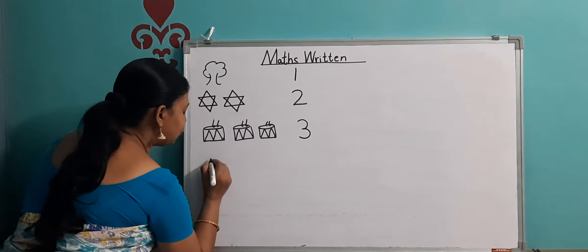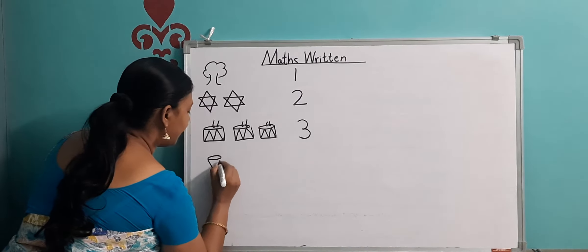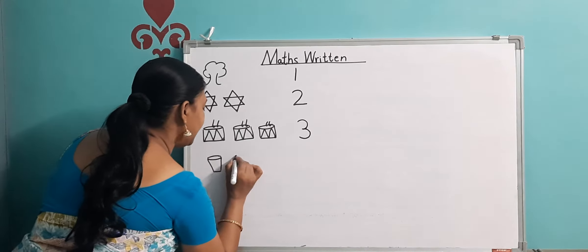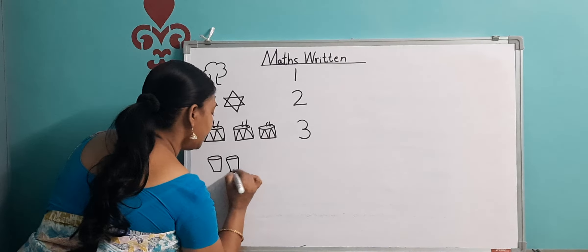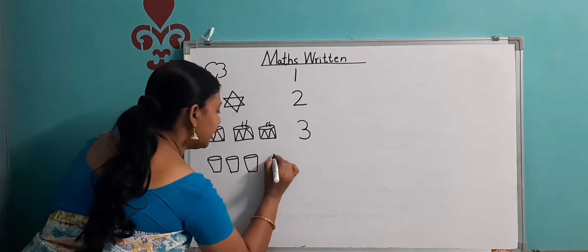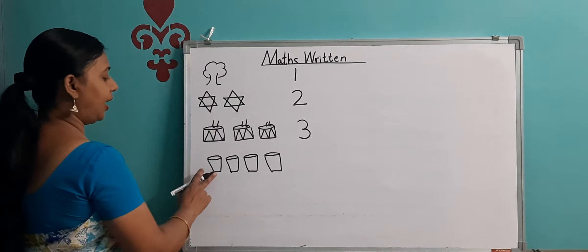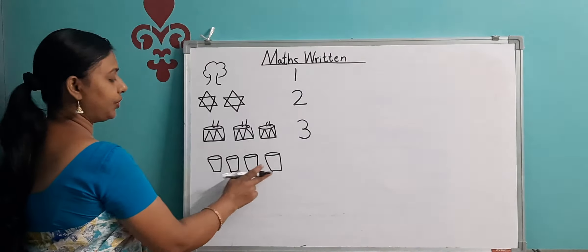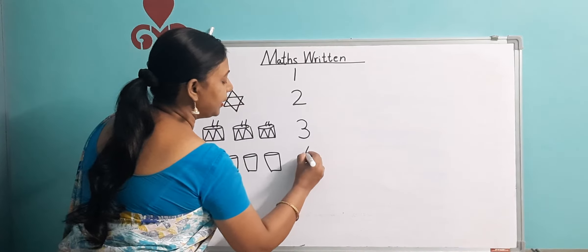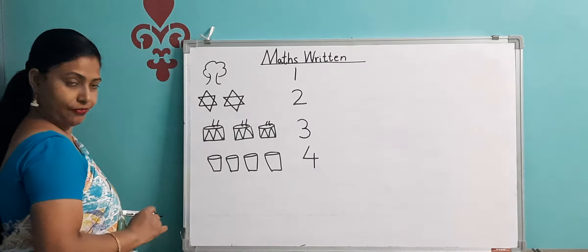Now, the next picture I am going to draw. This is a glass. One glass, two glass, three glass, and four glass. One more glass — so here are four glasses. One, two, three, and four. So how do we write four? We learn four: slant line, sleeping line, and standing line. This is number four.